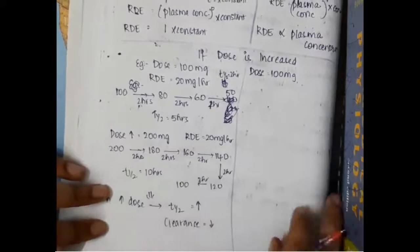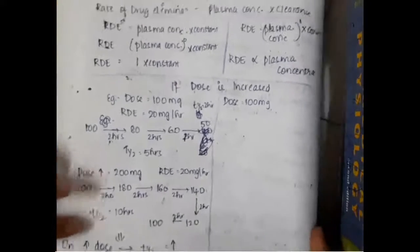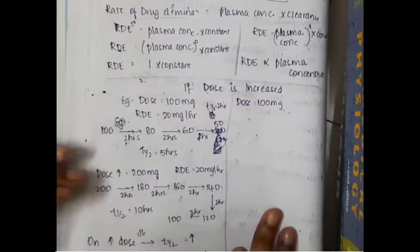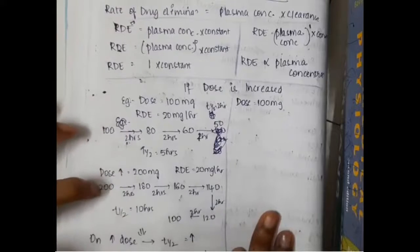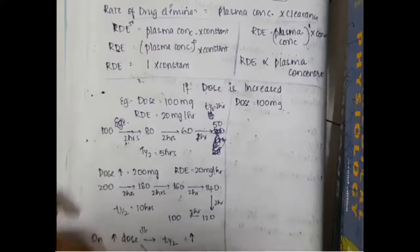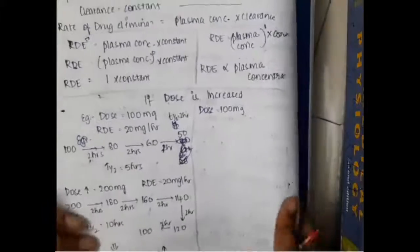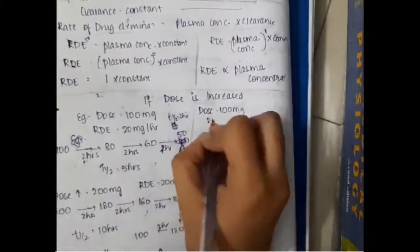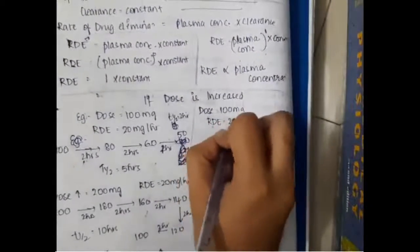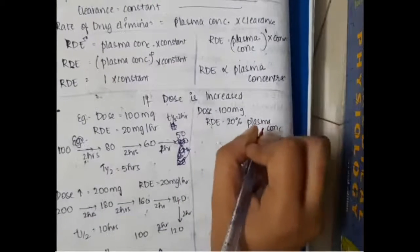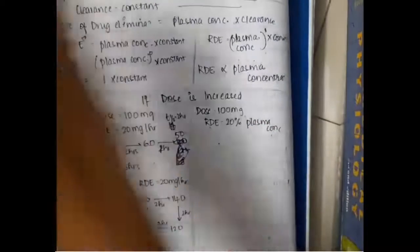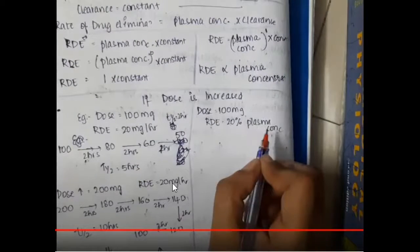So in zero-order reaction, clearance will decrease and half-life will increase when dose is increased.